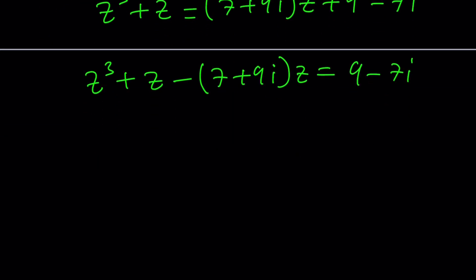I'm going to subtract this from both sides and leave the 9-7i on the right hand side because that's a constant. So now z³-z-7+9iz equals 9-7i. This becomes a cubic, but let's combine these two terms. Subtracting their coefficients gives me -6-9i. So I'll write this as z³-6+9iz equals 9-7i. Awesome.